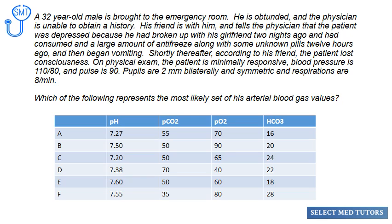A 32-year-old male is brought to the emergency room. He is obtunded and the physician is unable to obtain a history. His friend tells the physician that the patient was depressed after breaking up with his girlfriend two nights ago, had consumed a large amount of antifreeze along with some unknown pills 12 hours ago, began vomiting, and shortly thereafter lost consciousness.